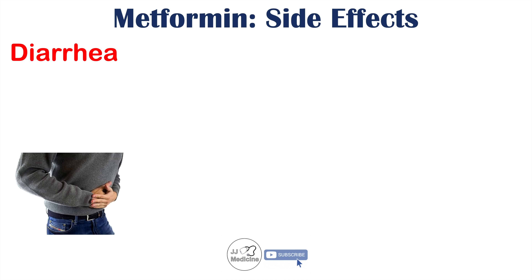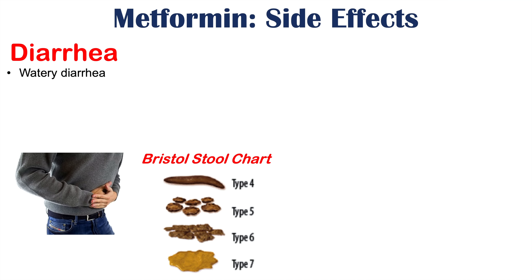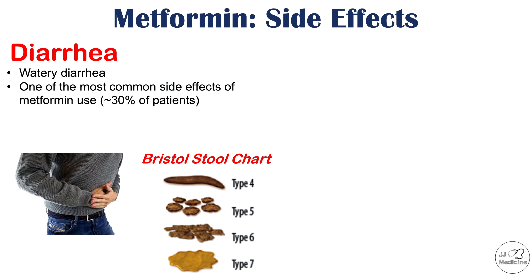One of the biggest side effects we see with metformin use is diarrhea. Most times it will be a watery diarrhea or a softening of stool. Looking at the Bristol stool chart, type 4 is normal stool, but with metformin we can see type 5, type 6, and type 7. Diarrhea is one of the most common side effects — roughly a third of patients will experience it, and it occurs in a dose-dependent manner.